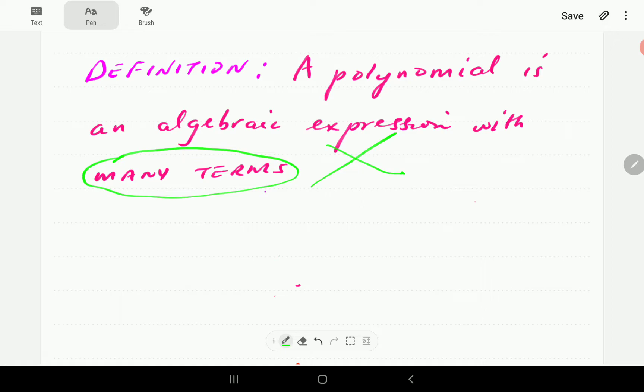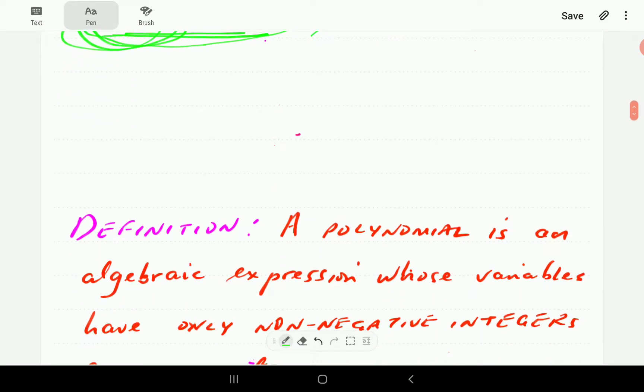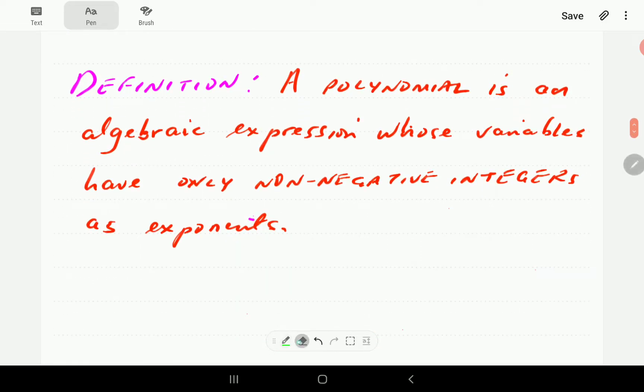The polynomial does not, the expression polynomial does not have anything to do with many terms as technically defined in mathematics. A polynomial is actually an algebraic expression whose variables have got only non-negative integers as exponents. So this is the key component of the definition.